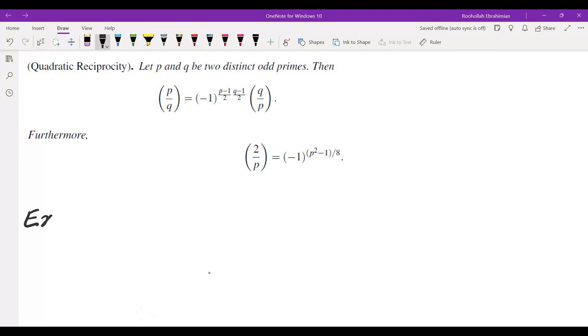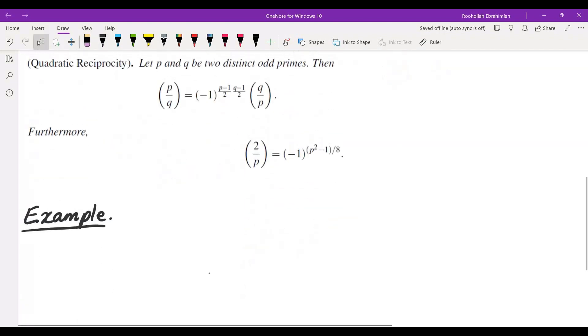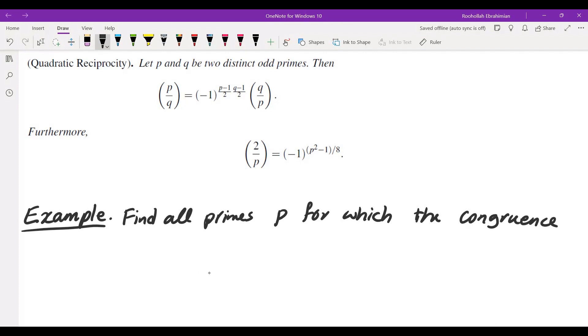Okay, so let me do an example to see how we can use this quadratic reciprocity or Euler's criteria. So here's the example I want to do. Find all primes P for which the congruence X squared is congruent to 3 mod P has a solution X in Z.